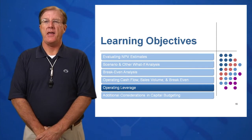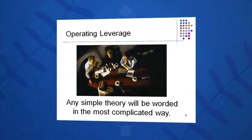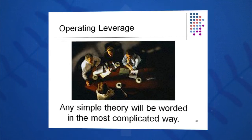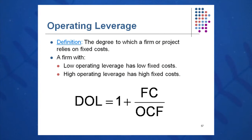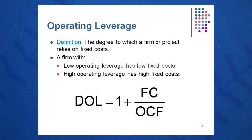A fifth learning objective for us today is degree of operating leverage. Degree of operating leverage is the degree to which a firm or project relies on its fixed cost. Typically, companies with lots of property, plant, and equipment have a high degree of operating leverage and therefore have a high dependence on fixed cost. Low operating leverage implies low fixed cost; high degree of operating leverage implies high fixed cost. The formula for it is one plus fixed cost over OCF.